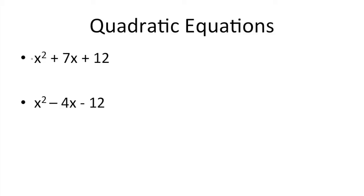So to find the factors of something like this — we went over it in the last episode — we look at the coefficient of the x squared term, and we look at the last number that doesn't have a variable. The coefficient of x is 1, so 1 and 1, and we need to find the factors of 12, which are 1 and 12, 3 and 4, and 2 and 6.